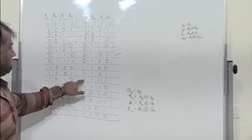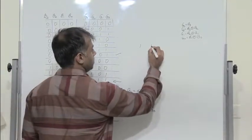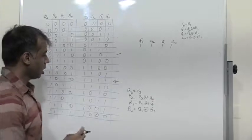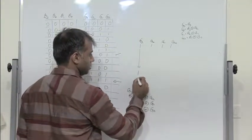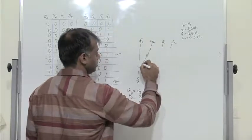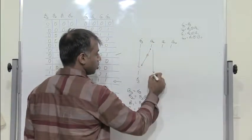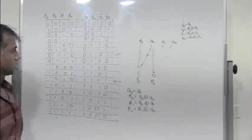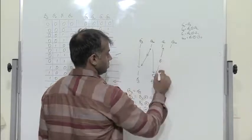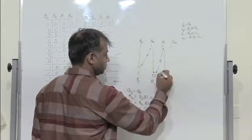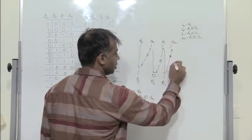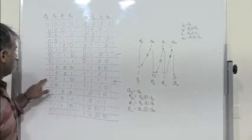Let's take any one of these bits — let's take 1, 1, 1, 1. This is G3, G2, G1, G0. How do I get B3? G3 itself is B3 — so B3 = 1. How do I get B2? XOR these two: B3 XOR G2 — 1 XOR 1 is 0.